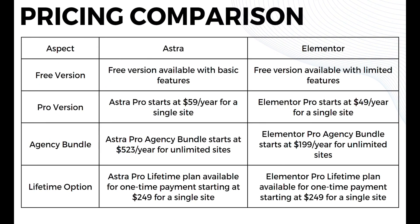In terms of pricing comparison: both Astra and Elementor offer a free version with basic or limited features. For the Pro version, Astra starts at $59 per year for a single site, while Elementor Pro starts at $49 per year for a single site. For the agency bundle, Astra Pro starts at $523 per year for unlimited sites, while Elementor Pro starts at $199 per year for unlimited sites. For the lifetime option, both Astra Pro and Elementor Pro lifetime plans are available as a one-time payment starting at $249 for a single site.